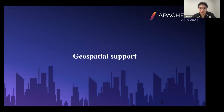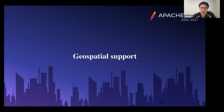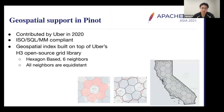Now we'll introduce new features developed over the past few years by both LinkedIn and Uber, and highlight some interesting use cases. The first feature contributed from Uber is geospatial support. Uber's business is by nature highly real-time and geospatial data relevant.